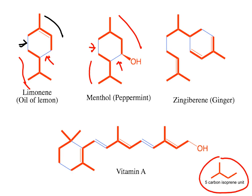On the other hand, if we look at the molecule that is one of the main ingredients of ginger, we notice that we have these bonds that are created. It's not between two isoprene units — it's actually three: one, two, three. That's called the triterpene.